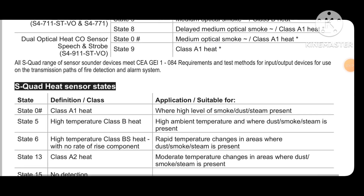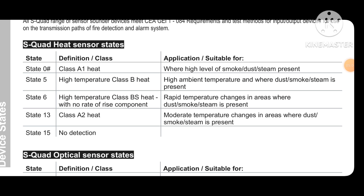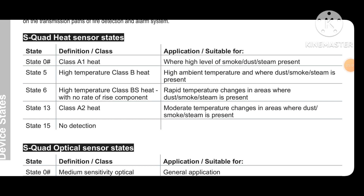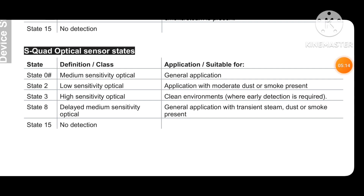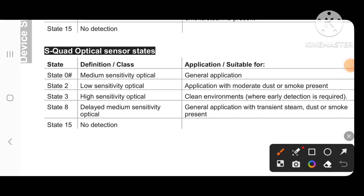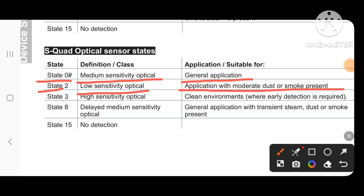For scored heat sensor states: state 0 to state 15 no direction; state 5 is high temperature class B heat. For optical sensors: state 0 is medium sensitivity for general applications; state 2 is lower sensitivity optical, for operation with moderate dust or smoke present; state 3 is high sensitivity optical for clean environments where early detection is required. State 8 is delay medium sensitivity, suitable where transient steam, dust, or smoke may be present.